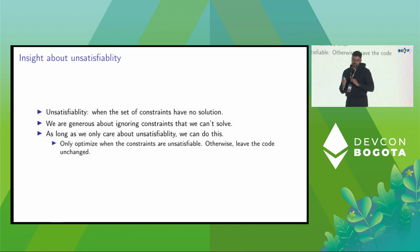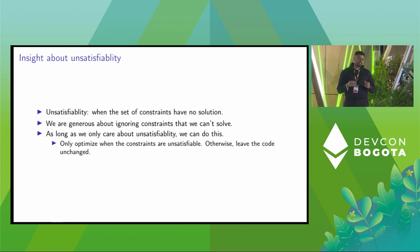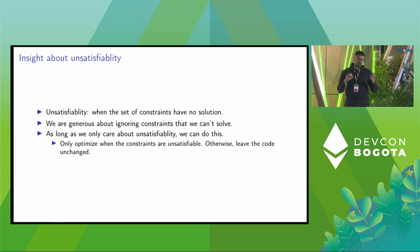Here is some insight about unsatisfiability. Unsatisfiability is when the set of constraints have no solutions. A lot of times we only encode a very small set of what we can actually encode, and we are very generous about ignoring the constraints we can't solve. Like I said, already we ignore non-SSA variables. So as long as we only care about unsatisfiability, we can do this. And we can usually optimise when the constraints are unsatisfiable. Otherwise we just leave the code unchanged.